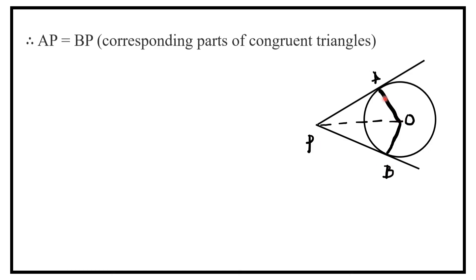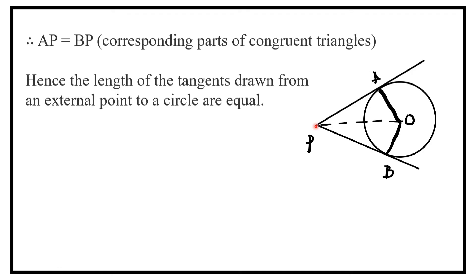AP is equal to BP, corresponding parts of the congruent triangles. Hence, the length of the tangents drawn from an external point to a circle are equal.